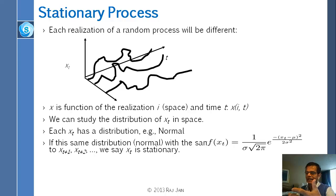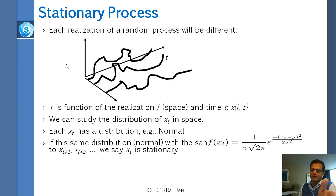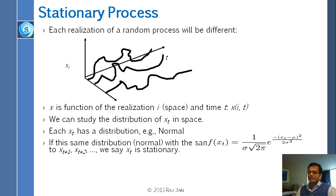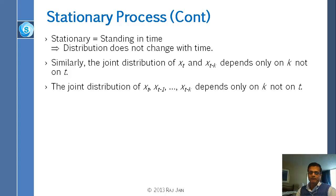A stationary process means the distribution does not change with time. It is moving randomly, but the distribution itself is not changing — it is stationary in time. Stationarity means not only the same distribution and same parameters, but also that if you take any two time frames xt and x_{t+k}, the joint distribution will not depend on t — at most it can depend on k, the time difference, but not on absolute time.